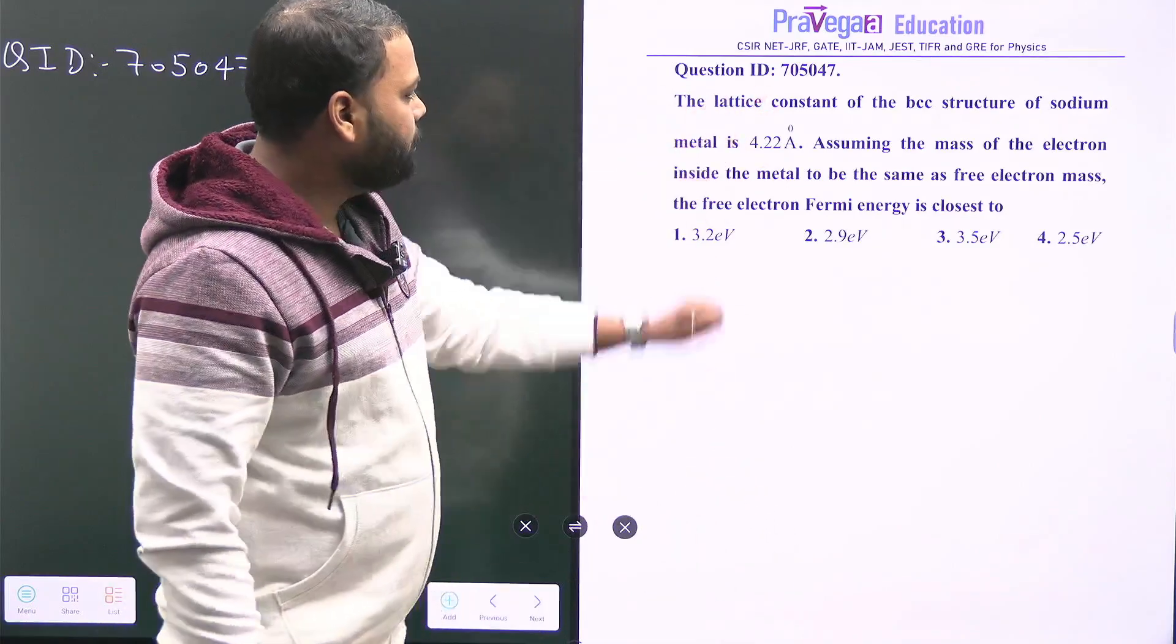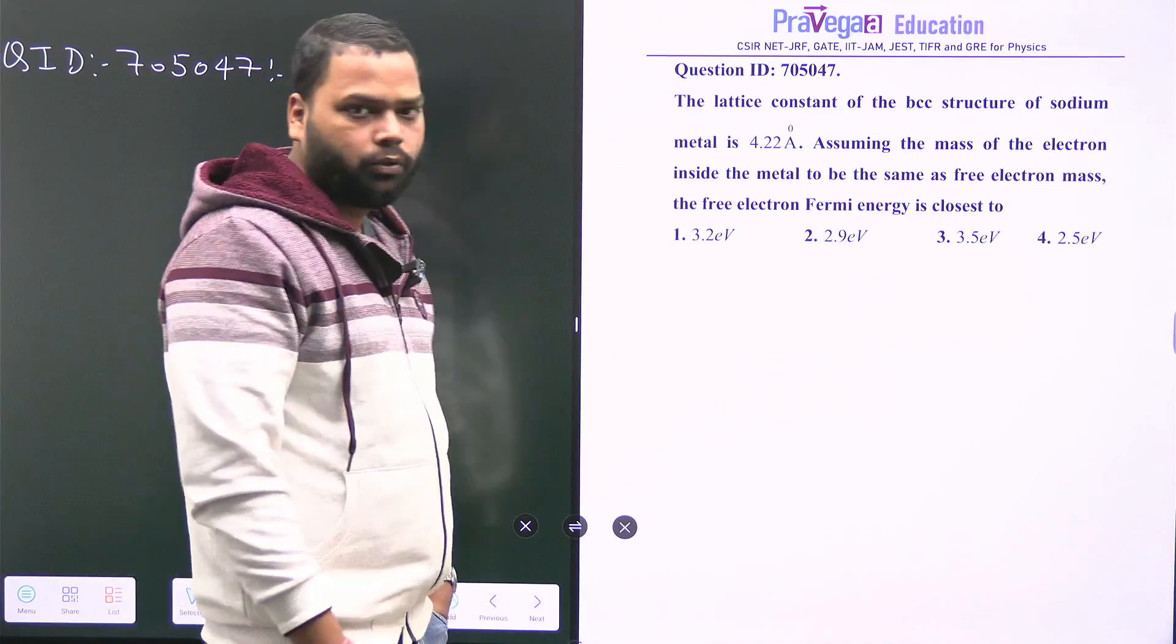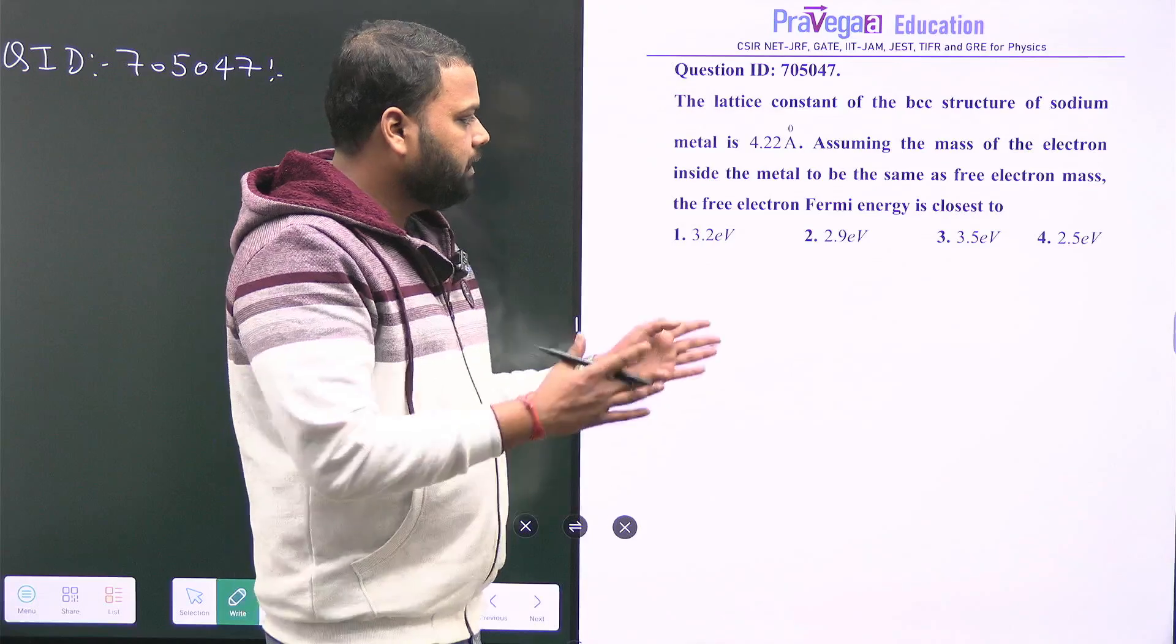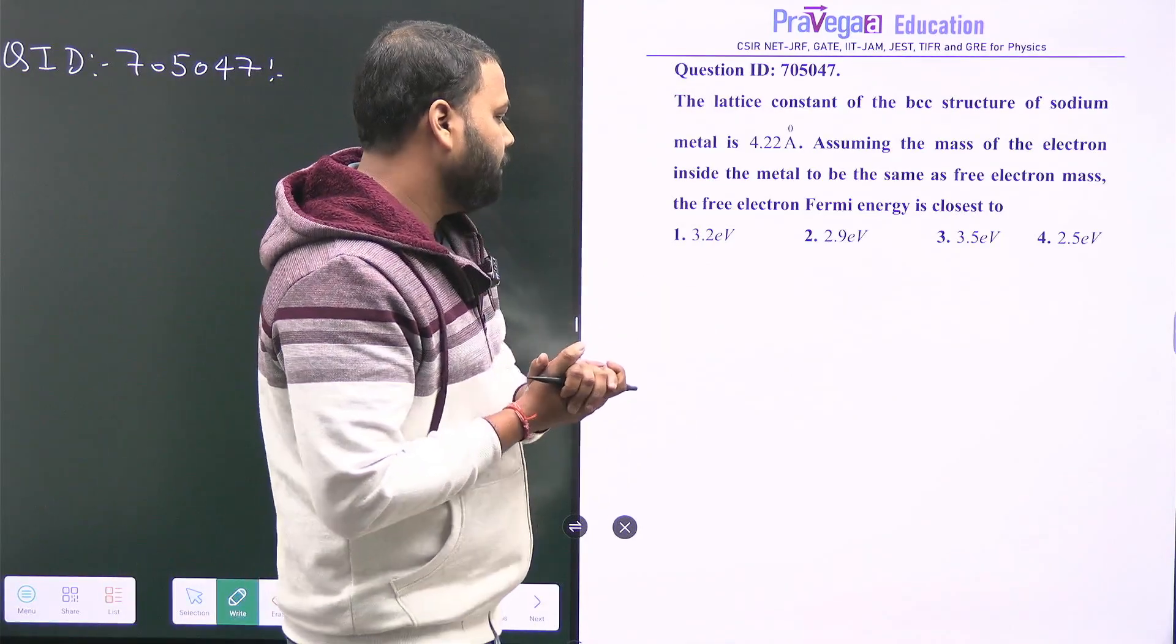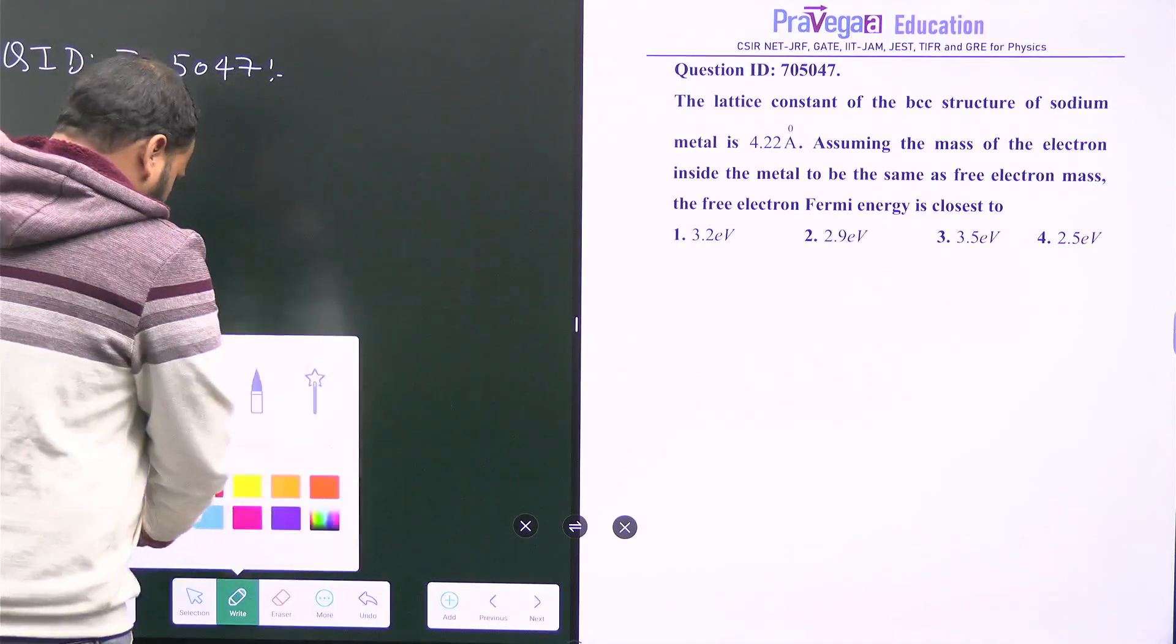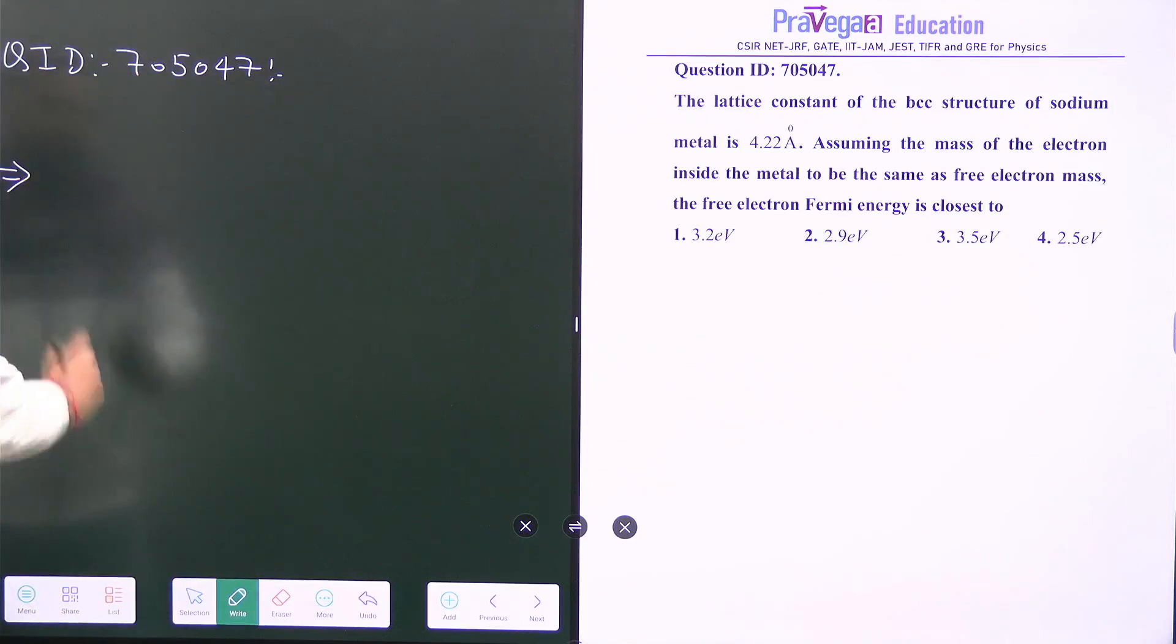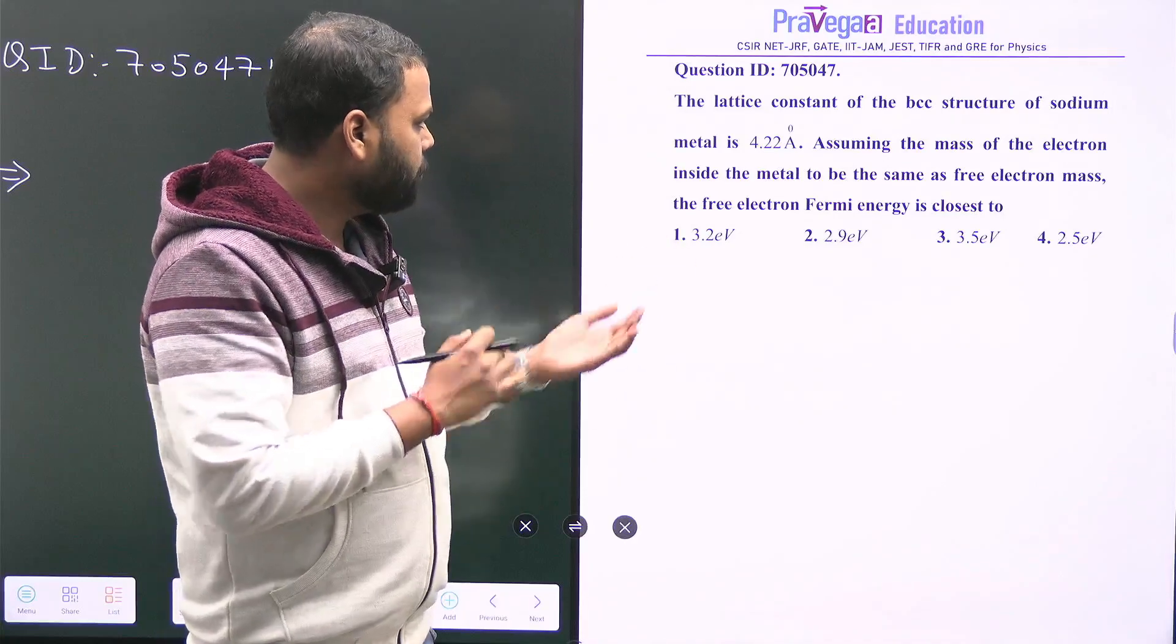The lattice constant of the BCC structure of sodium metal is 4.22 angstrom. We assume the mass of the electron inside the metal to be the same as the free electron mass, and you have to find the free electron Fermi energy. This question is from the quantum free electron theory we discussed.